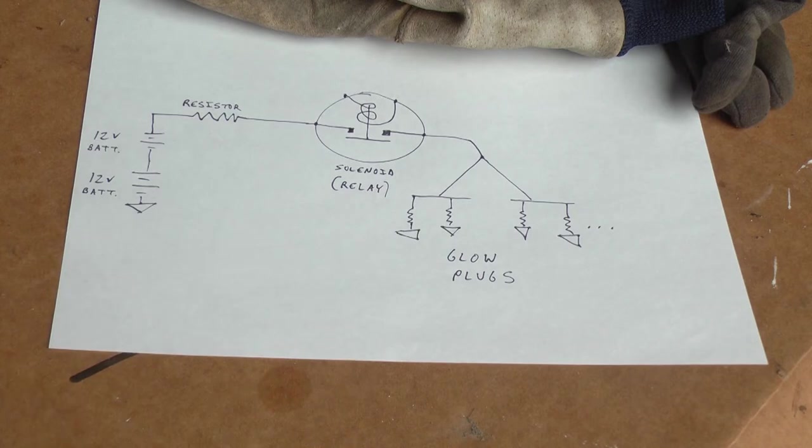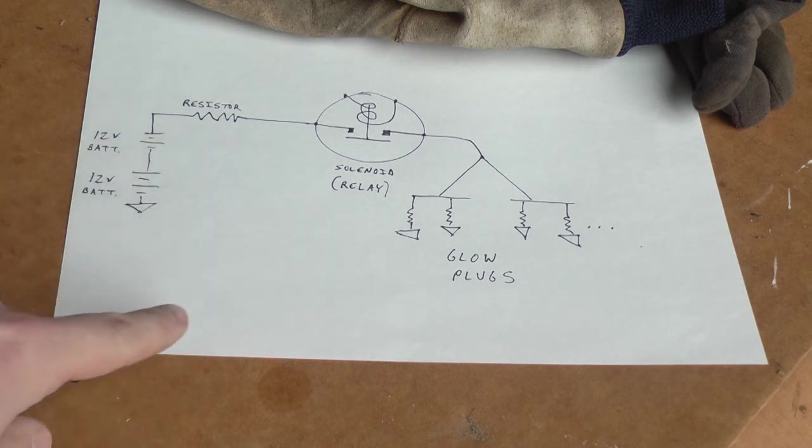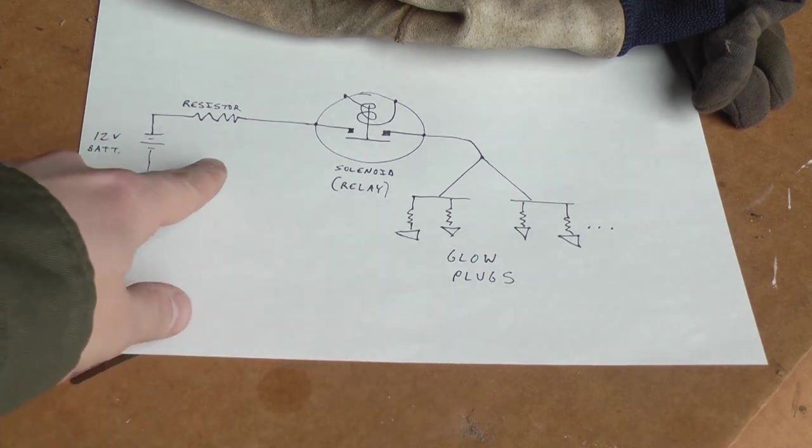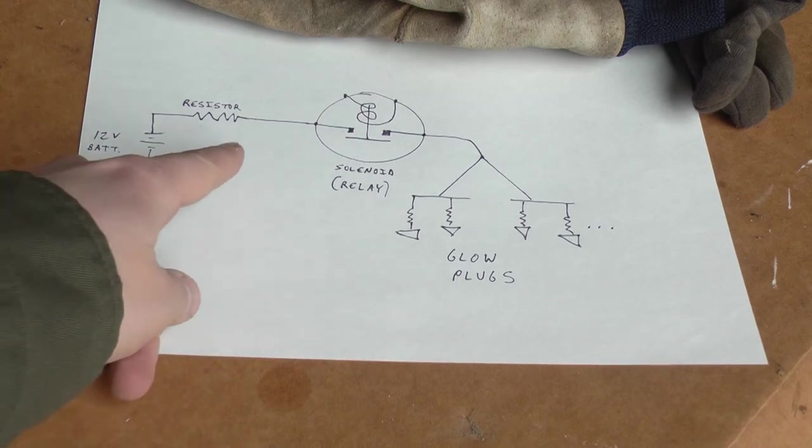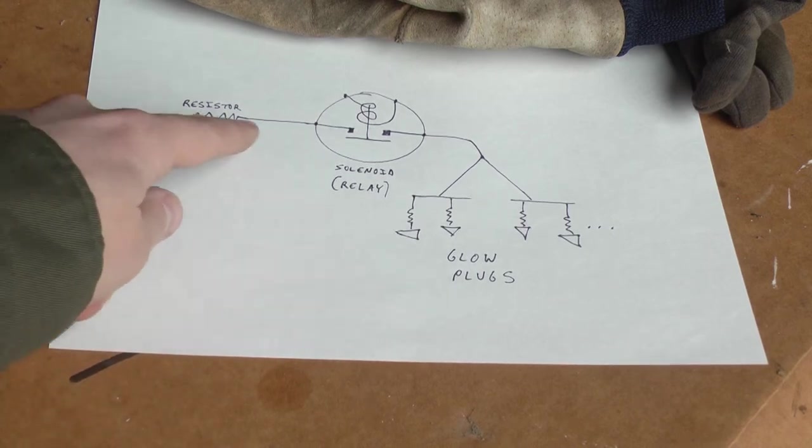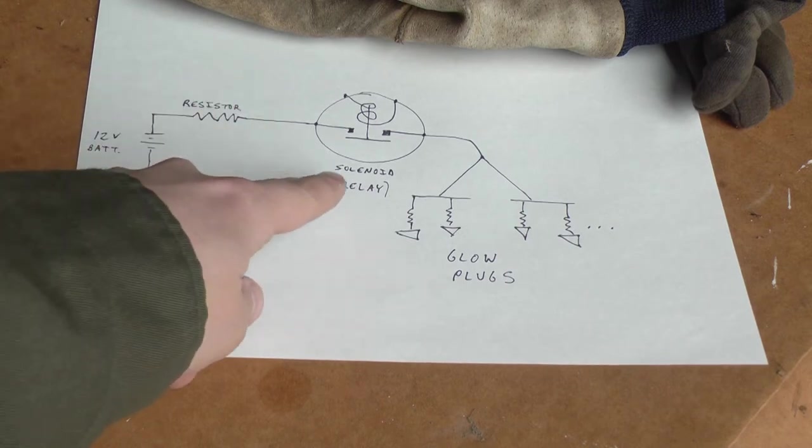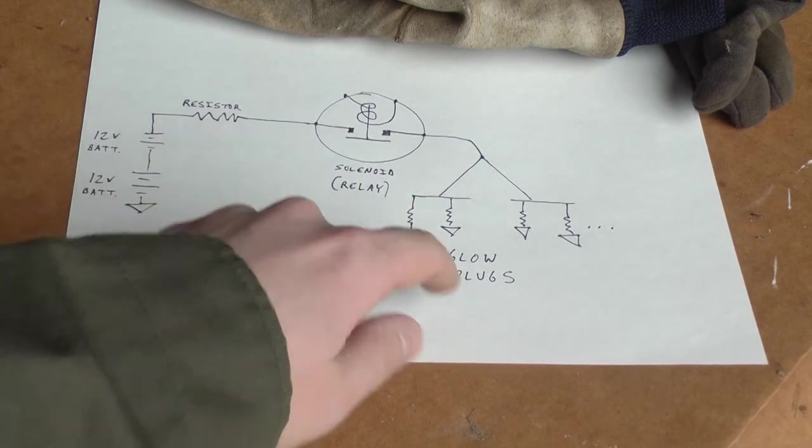Now, the glow plugs are actually just plain old 12 volt glow plugs. In fact, they're rated at, usually they're rated at 10.5 volts, because there's some voltage drop in the wires going to them. So even though this is a 24 volt system, you still buy 12 volt glow plugs. And that's because of this resistor right here. This resistor drops the voltage from 24 volts here to approximately 12 volts going through the solenoid and the glow plugs.